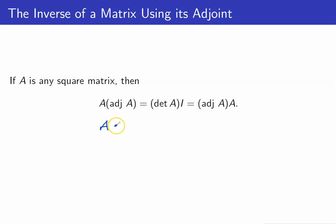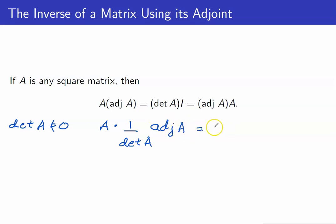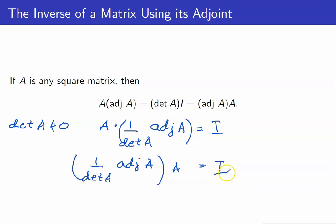Note that I can write this as A times the quantity 1 over det(A) times adjoint of A, assuming the determinant of A is not equal to 0. This equals the identity. Similarly, 1 over det(A) times adjoint of A, times A, also equals the identity. This is saying that there exists a matrix which, when multiplied on the left or right of A, gives the identity matrix — provided the determinant of A is not zero. Therefore, this is the inverse of A.